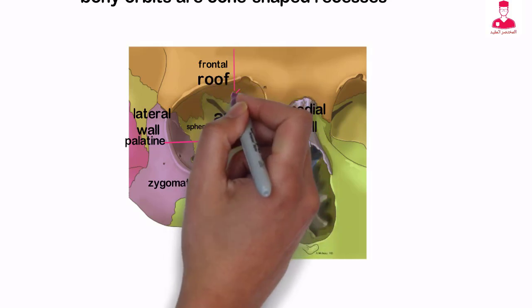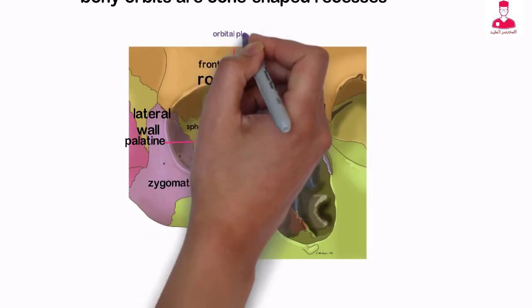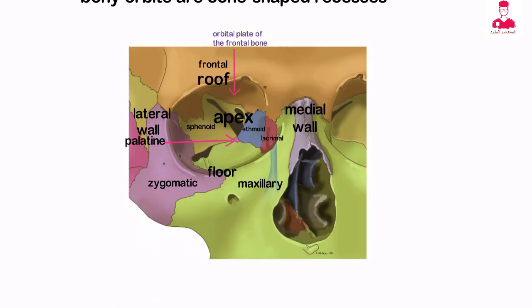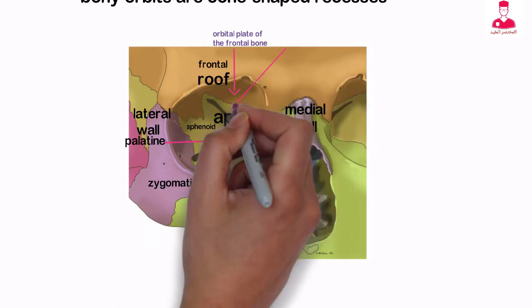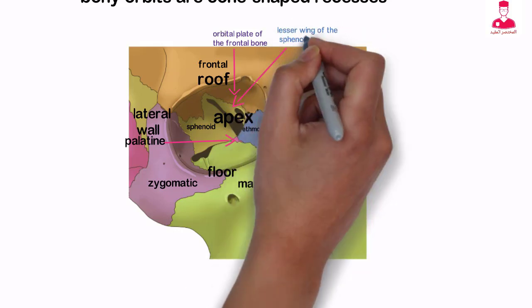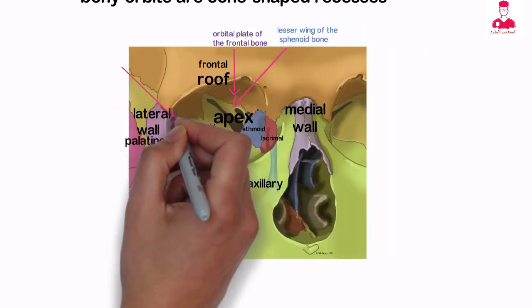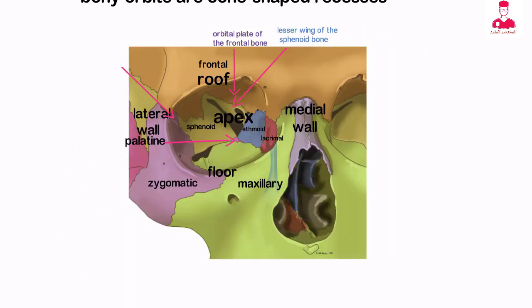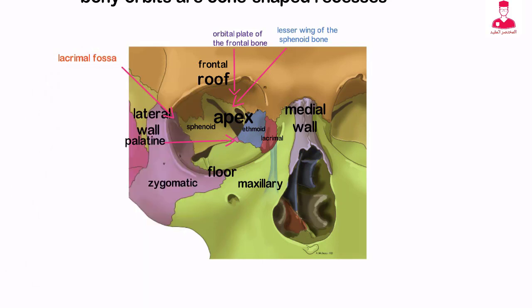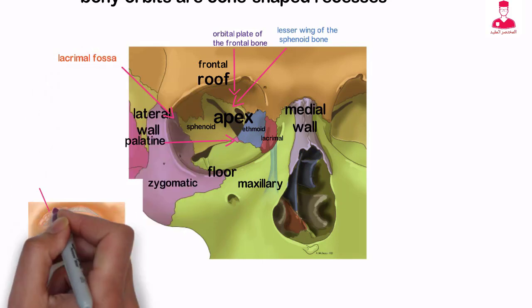The roof of the orbit is composed of the orbital plate of the frontal bone and the lesser wing of the sphenoid bone. On the anterolateral surface of the roof is the lacrimal fossa, where the lacrimal gland is located.